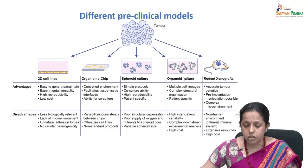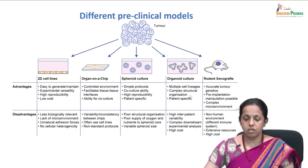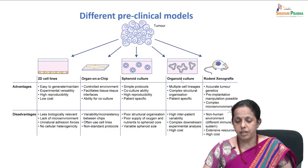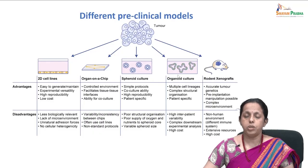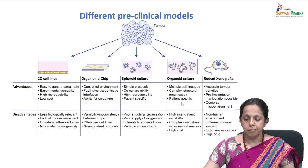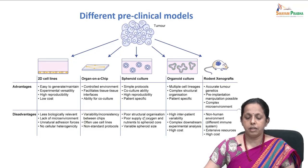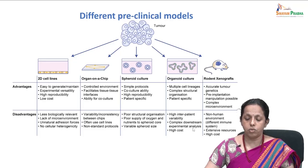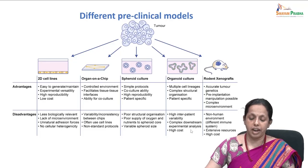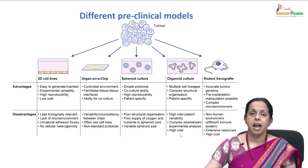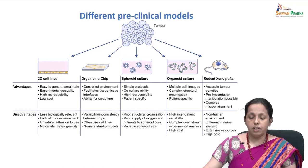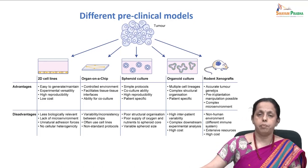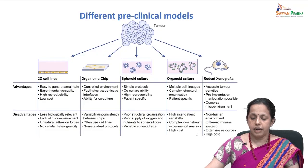Organoid co-cultures involve multiple cell lineages, complex structural organization, and are very patient-specific, which we will be seeing further in this session. However, the same disadvantages apply as with spheroids and mammospheres — highly inter-patient variability, it is very tough to scale up downstream experimental analysis, and the high cost of organoid cultures makes them difficult to use in economical setups. Coming to the patient-derived models, which we will discuss in the next class.